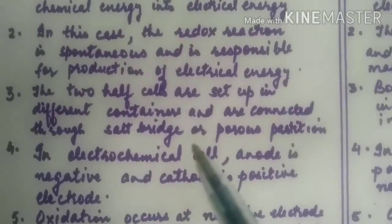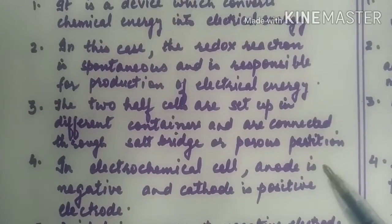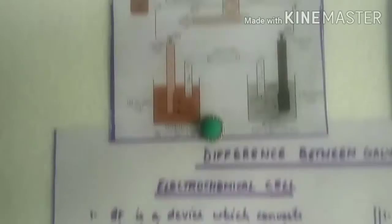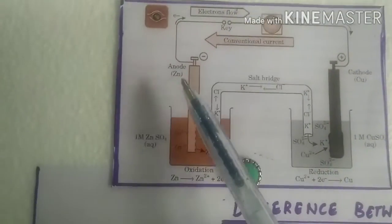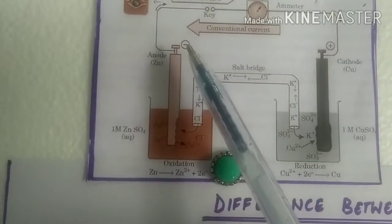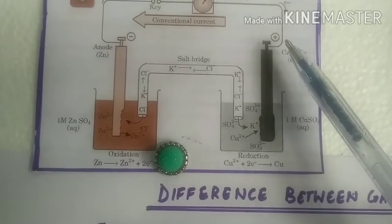In electrochemical cell, anode is negative and cathode is positive electrode. Anode zinc is negative, cathode is positive.